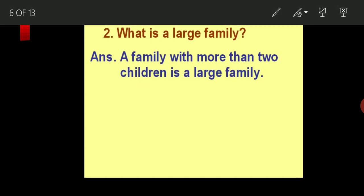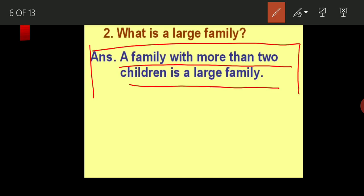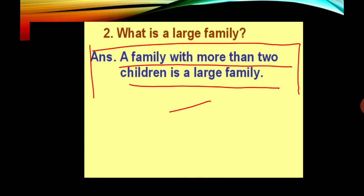The next one is large family. A family with more than two children is called a large family. Suppose in your family you are living with your mother and father, and along with that you have two brothers, two sisters, and your grandparents — your grandmother and grandfather. In this way, the family will be large, with more family members compared to the small family. Such a family is called a large family.